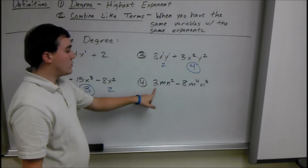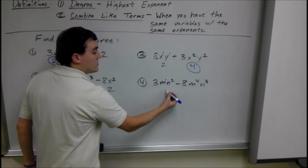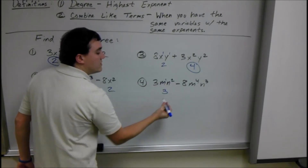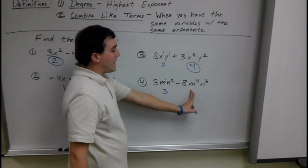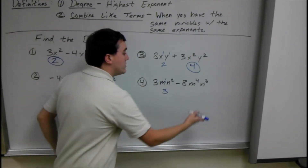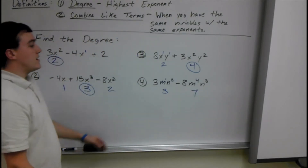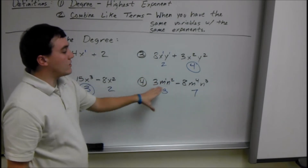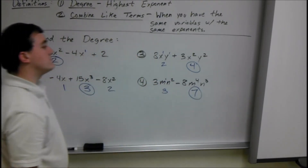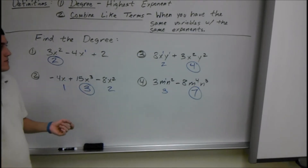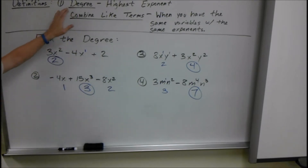Same case here. We have 3mn squared. Since this is just m, it's m to the first, so our degree is 3. And we have minus 8m to the fourth n cubed, so our degree is 7. Therefore, the degree of the entire polynomial would be 7. Remember, we are just looking for the term with the highest degree when we're talking about the degree of a polynomial.